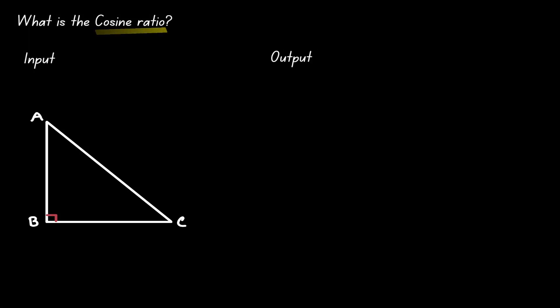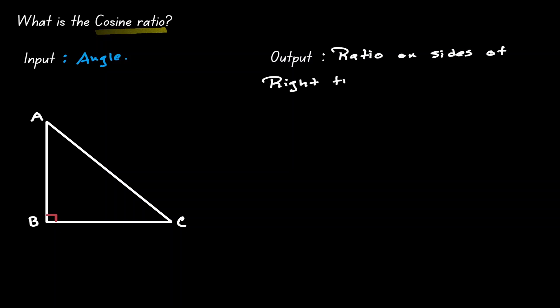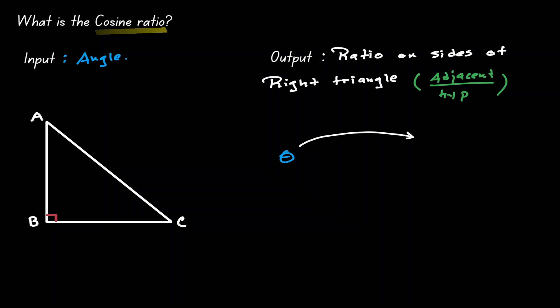Cosine can also be seen as a function. The input is an angle and the output is a ratio of the sides of a right triangle, where the ratio is adjacent over hypotenuse. To visualize this function, we take an angle and evaluate it with the cosine function — abbreviated as cos — and the outcome is the ratio adjacent over hypotenuse.